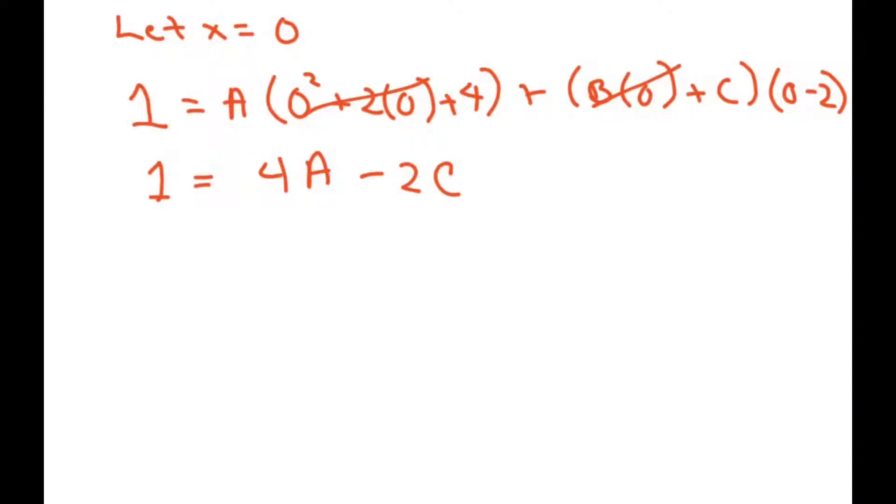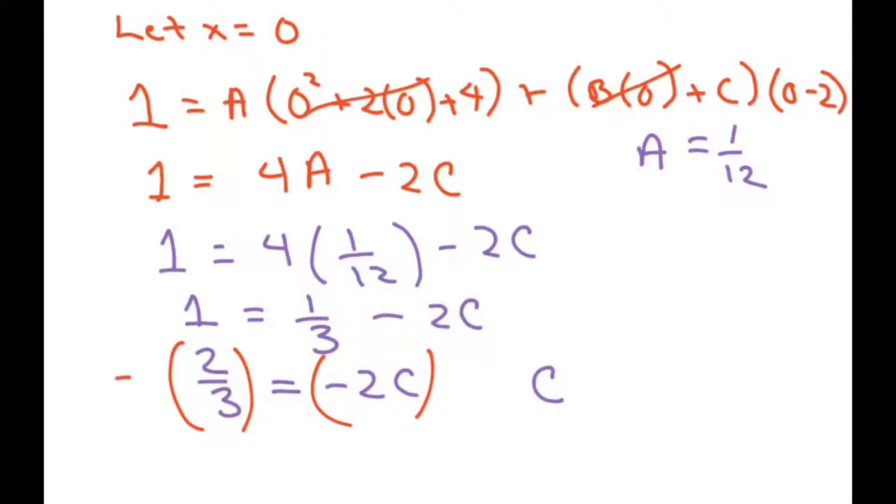Now we already have A, our A was 1/12, so plug that in, you get 1 equals 4 times 1/12 minus 2C, so that's 1 equals 4 over 12 is 1/3 minus 2C, and 1 minus 1/3 is 2/3, so I just subtracted the 1/3 from 1 and get negative 2C, multiply both sides by negative 1/2, and you're going to get C, so we're just multiplying both sides by negative 1/2, so you get C equals negative 1/3, when you reduce that.